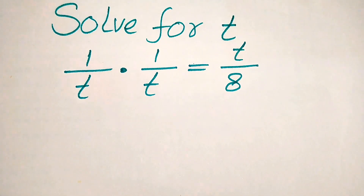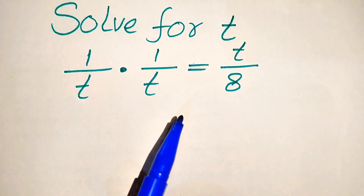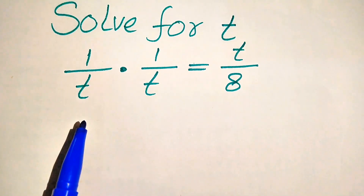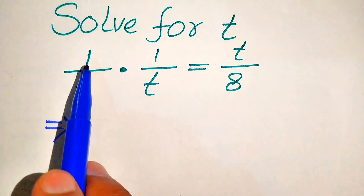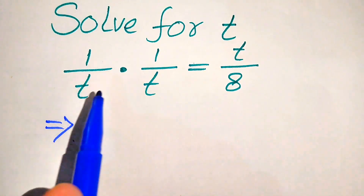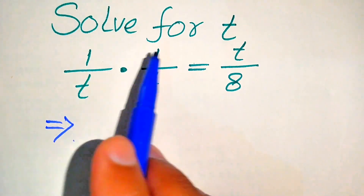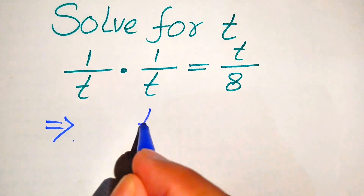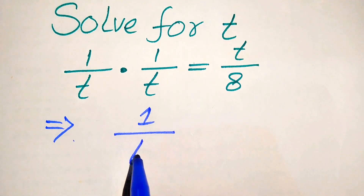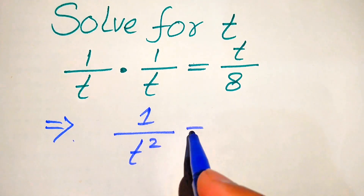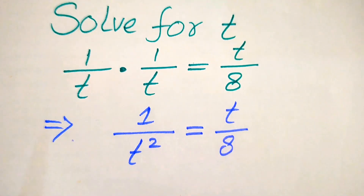The very first step is to remove the fractional values from both sides. On the left hand side we multiply the numerator term with denominator and denominator with denominator, so we have 1 multiplied by 1 equals 1, divided by t multiplied by t equals t squared, and this equals t divided by 8.